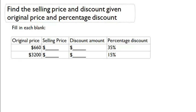Find the selling price and discount given original price and percentage discount. For this table we're given the original price and we're given the percentage discount. What we need to fill in is the selling price and the discount amount.